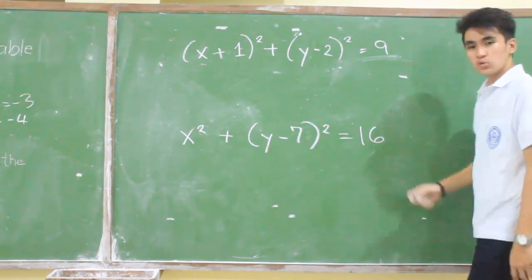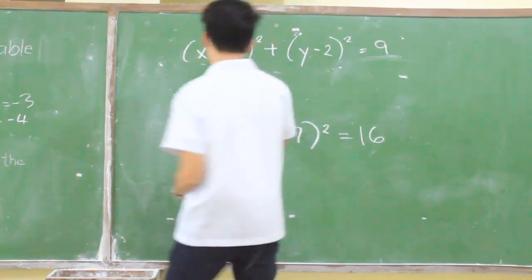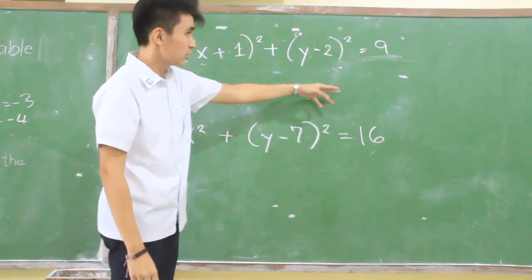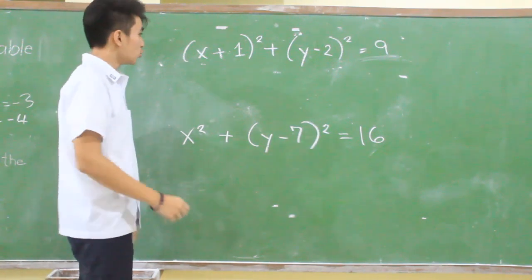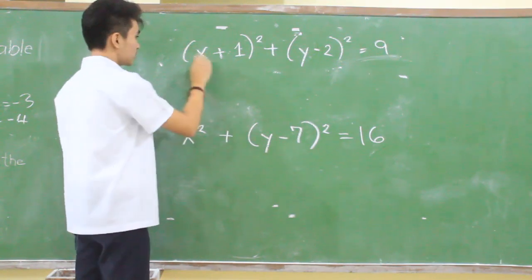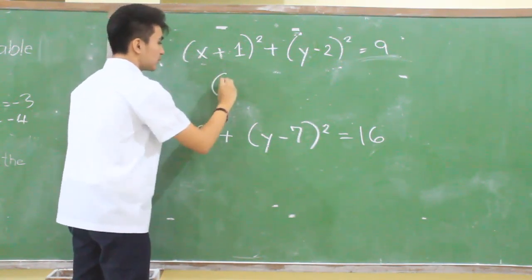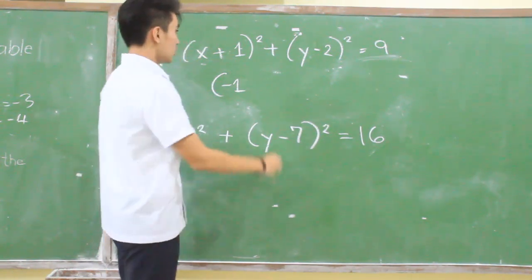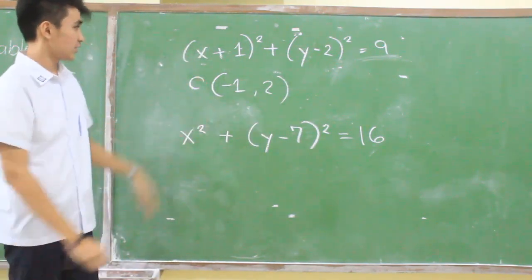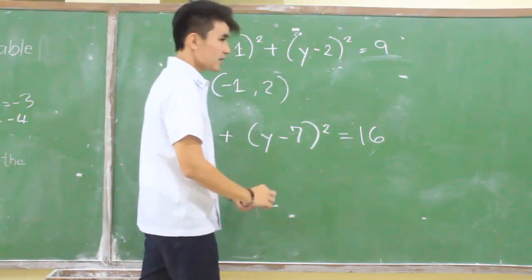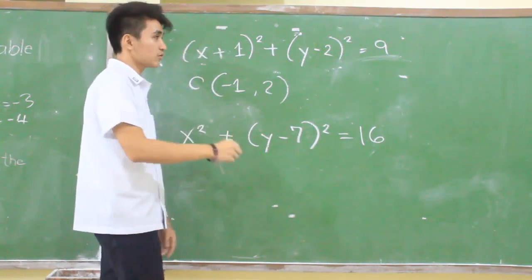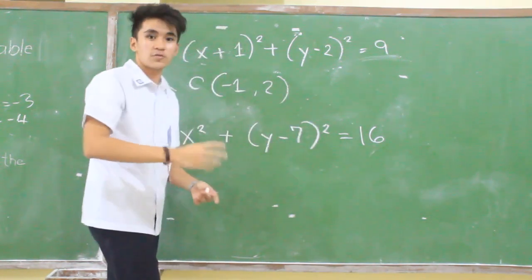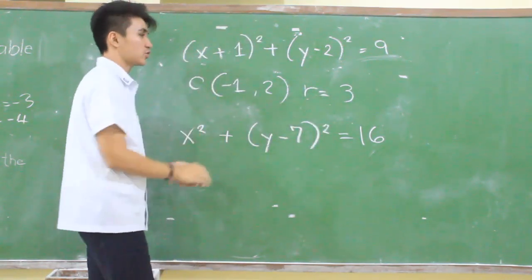In this equation, we will teach you how to find the center and the radius. We can see that this equation is: quantity x plus 1 raised to 2, plus y minus 2 raised to 2, equals 9. To find the center of a circle, we equate x plus 1 to 0, so x becomes negative 1. And if we equate y minus 2 to 0, y becomes positive 2. So the center of this circle is negative 1, 2. To find the radius, we take the square root of the value on the right side, which is 9. The square root of 9 is 3, so the radius is 3.